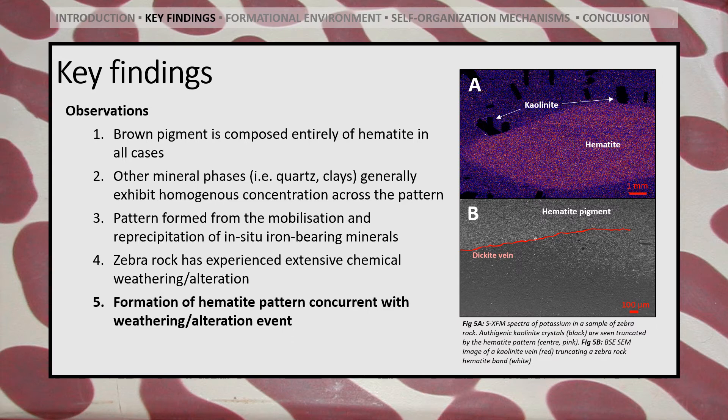This weathering event likely facilitated the development of the zebra rock pattern, as indicated by the interactions of a number of authigenic hydrothermal minerals within the hematite pigment. For example, kaolinite crystals being truncated by the dark hematite banding as seen in figure 5a, or the pattern itself being truncated by a dickite vein in figure 5b.